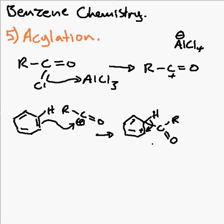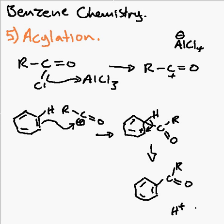And of course the hydrogen stabilises that when it leaves, and you end up with your acyl-related benzene. Of course you've got your hydrogen left over, but then you've also got your AlCl4 minus. What actually happens is when it floats around with the AlCl4, it takes back the Cl minus and forms HCl — hydrochloric acid.